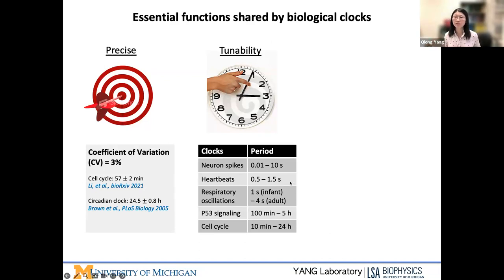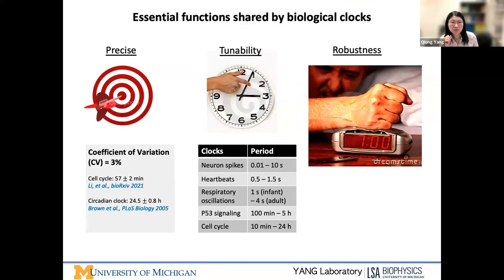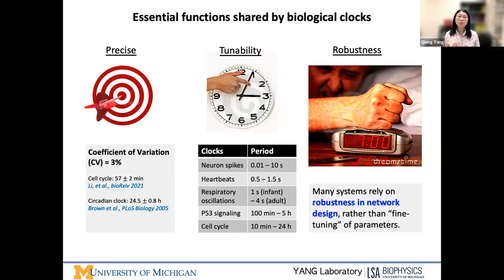Additionally, clocks need to have the ability to talk to the environment and adjust to external signals. What's interesting is a lot of oscillators, including the cell cycles, are highly tunable in frequency, but the amplitude maintains a stable level. That is something called frequency modulation. Last but not least, these clocks need to be robust. There have been studies to show that many systems from bacterial chemotaxis to developmental patterning seem to not require fine tuning of the parameters. Instead, they develop robust networks that maintain stable function.